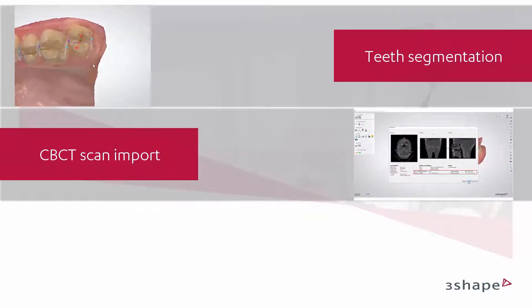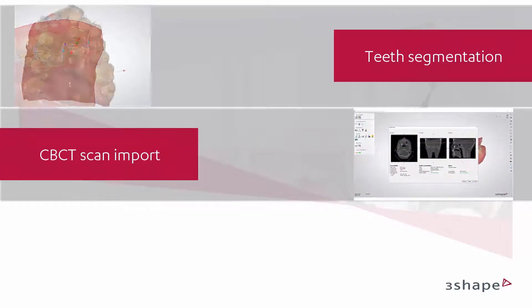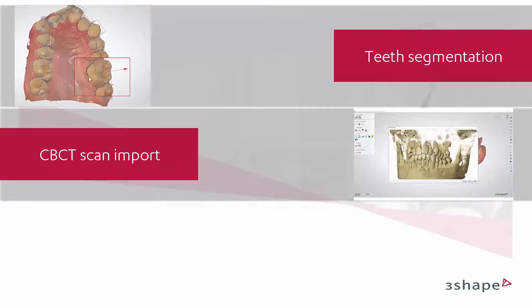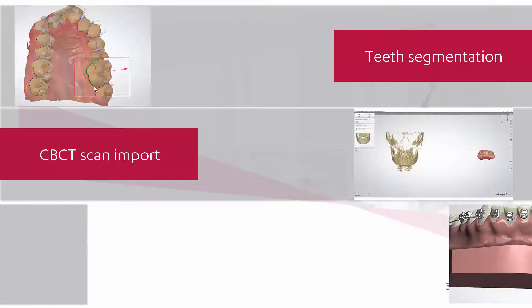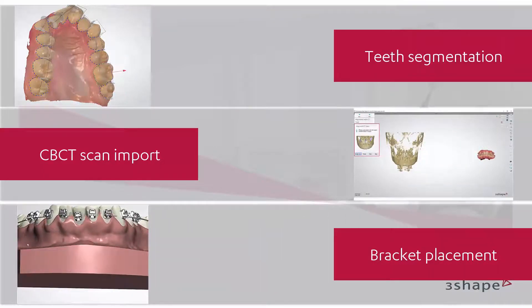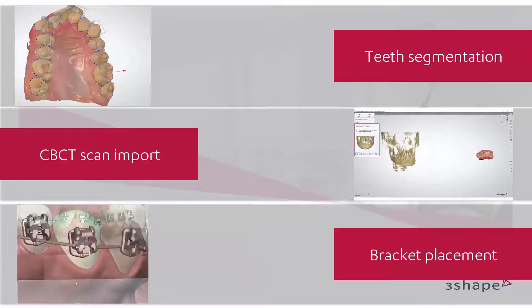You can import a CBCT scan and align it with a real color digital model set from the Trios software. In this way, you'll have an overview of the root's position. This will support you in bracket positioning and the process of creating a virtual setup.